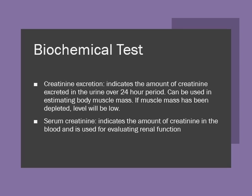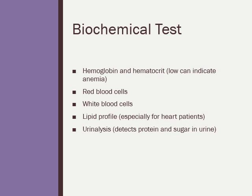Other biochemical tests include creatinine, which can be used for evaluating renal function. Tests can also include checking for hemoglobin protein to indicate if a patient has anemia. They can check for red blood cells and white blood cells, do a lipid profile which is very important for heart patients, and also perform a urinalysis to detect protein and sugar in the urine.